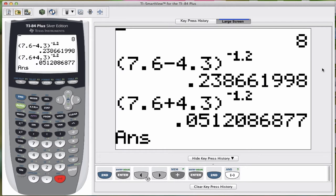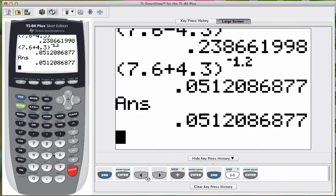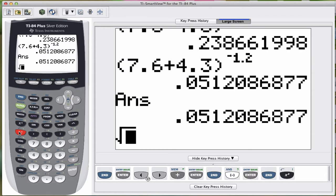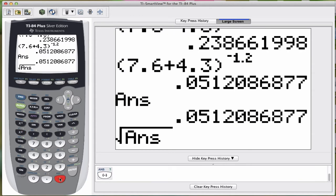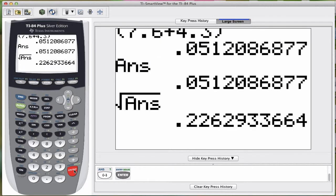So let's say I wanted to find the square root of the above answer. What I'm going to do, I'm going to get to my square root by pressing 2nd, x squared. And then to get to 2nd answer, 2nd, that negative. And I just found the square root of 0.0512086877.